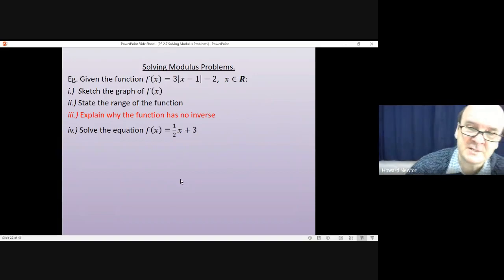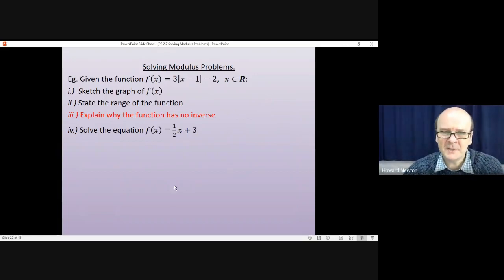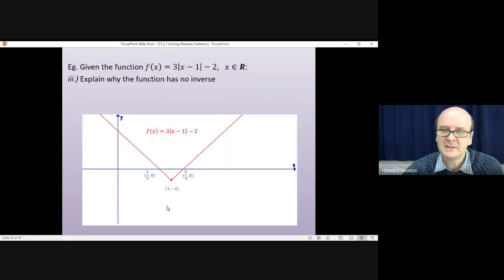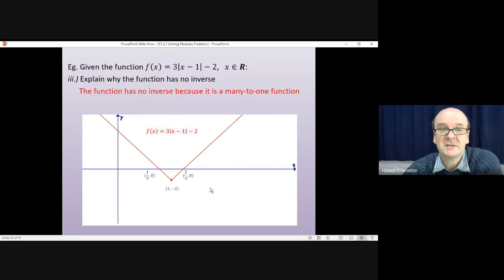Part three is explaining why the function has no inverse. Well, that comes back to functions and inverse functions. A function has to be one to one to have an inverse. Now this function is not one to one. If you drew a horizontal line through it, it would cross the graph twice. That means this value here would give you an answer, and this value here would give you the same answer. So it doesn't have an inverse because it's not one to one. Probably the best way to write down the answer is the function has no inverse because it's a many to one function. Many values of x will lead to the same value of y.